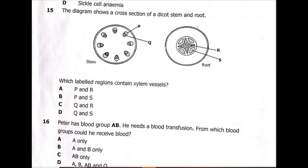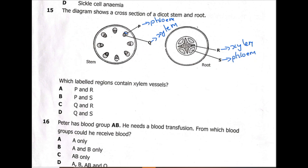Now let's move on to question 15. The diagram shows a cross-section of a dicot stem and root. P is phloem — on the outside. Then we have the cambium. Q is xylem. Looking at the multiple choices — which labeled regions contain xylem vessels? Xylem is Q and R, so the answer is C.